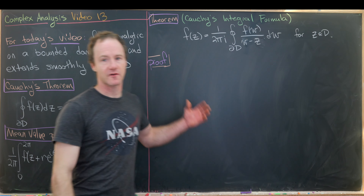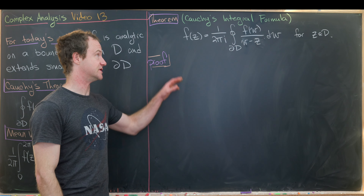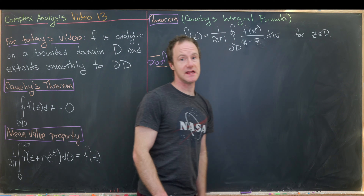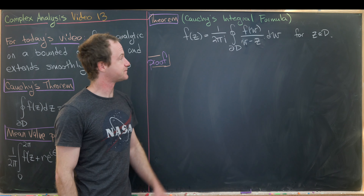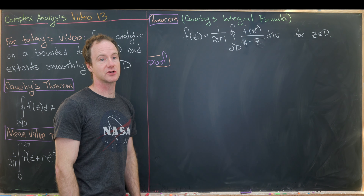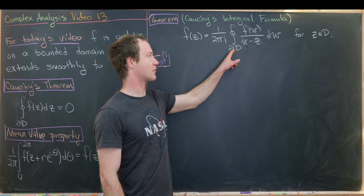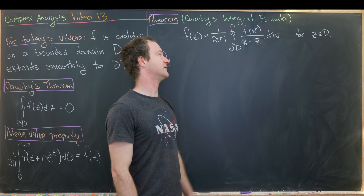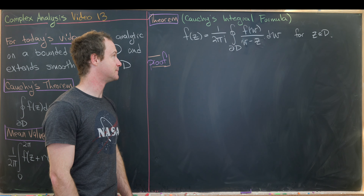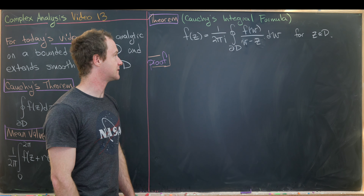Our first big result today is Cauchy's Integral Formula. It says that for all z in D, f(z) equals (1/2πi) times the integral around the boundary of D of f(w)/(w − z) dw. Let's see how we can get into this proof.